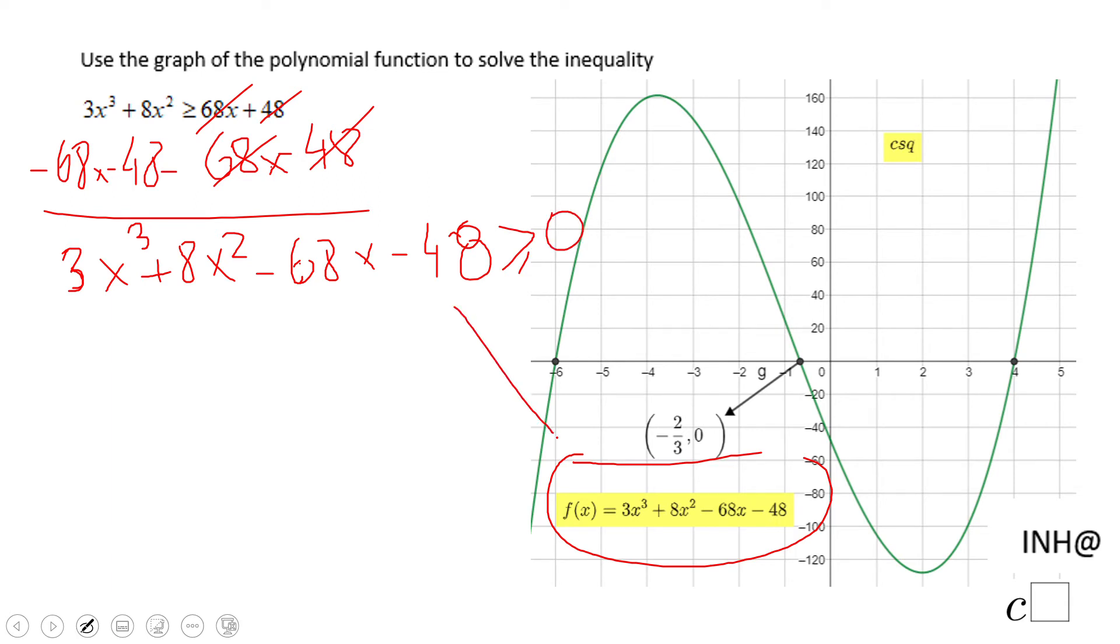Now these two guys are the same thing. If we have the graph, the only thing you need to look at for solving this inequality is when this graph is above the x-axis, and that happens from negative 6...